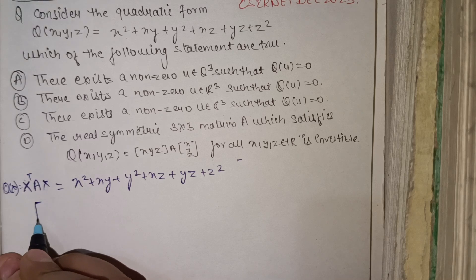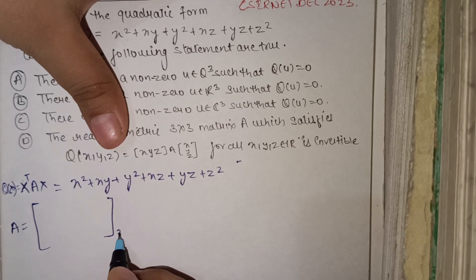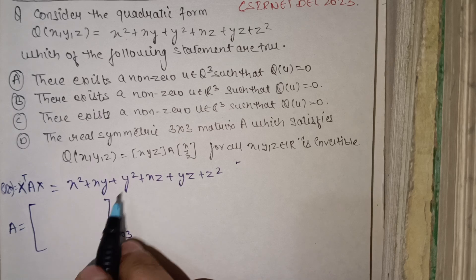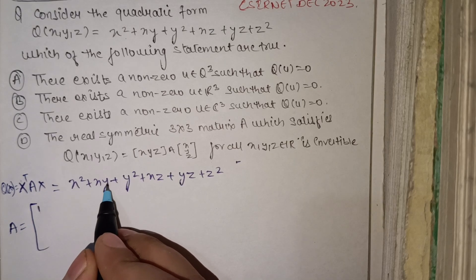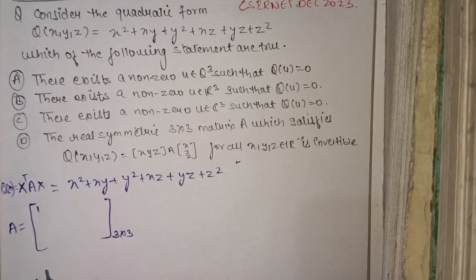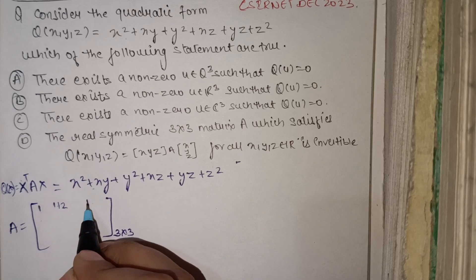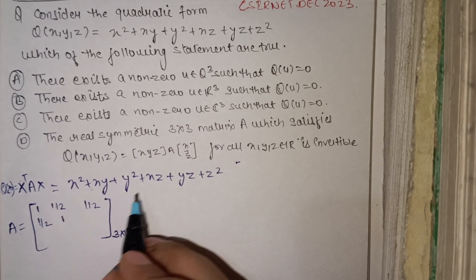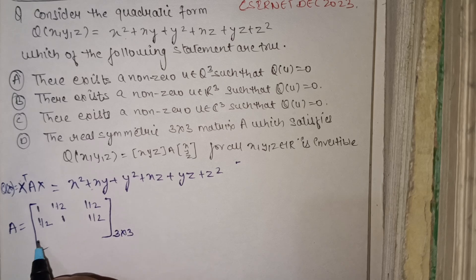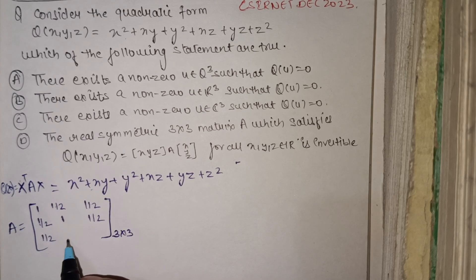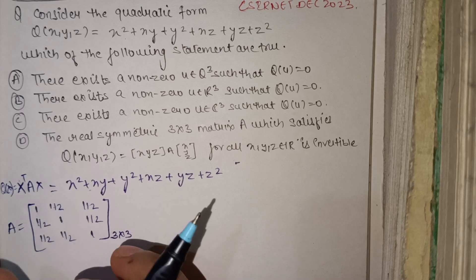We form matrix A, which is a 3×3 matrix. For x² the entry is 1; for xy and yx we take half the coefficient, so 1/2; for xz we get 1/2. For y² the entry is 1; for yz and zy we take half the coefficient, so 1/2. For zx we get 1/2, and for z² the entry is 1. This is our required matrix of this quadratic form.